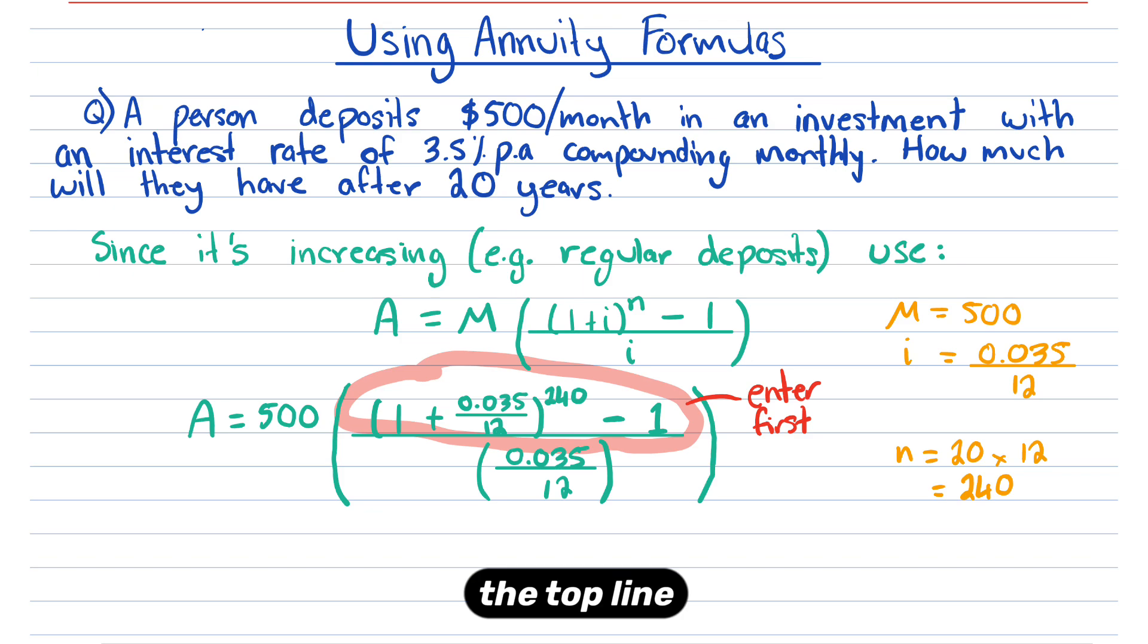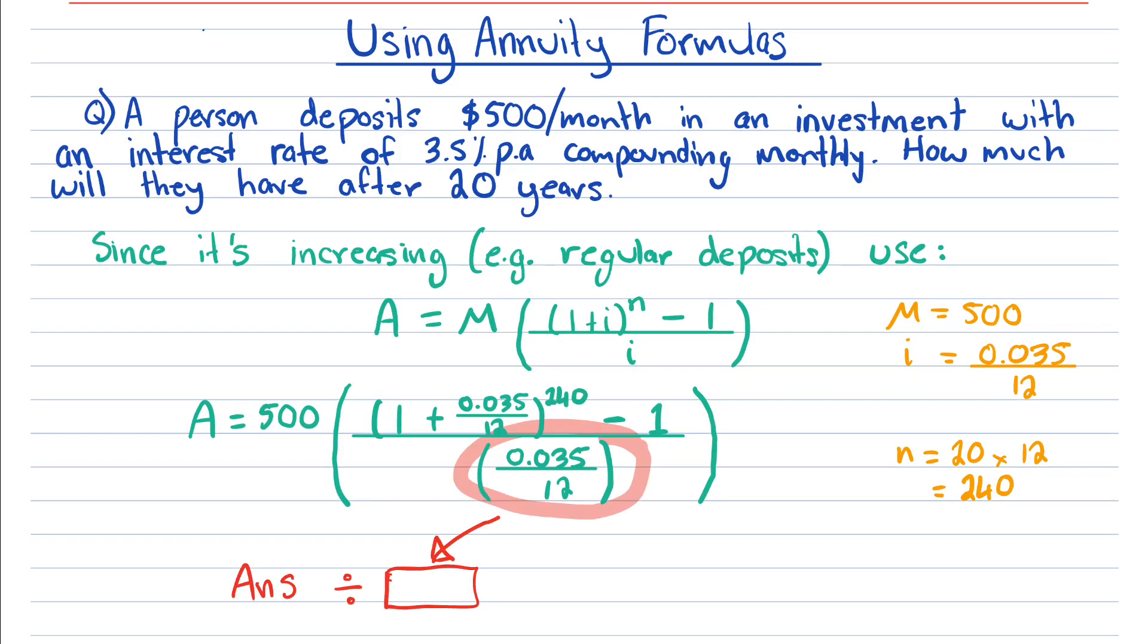My way around this is to enter the top line first. Just enter that, ignore everything else, enter the top line only. Then hit equals and you'll have an answer stored.